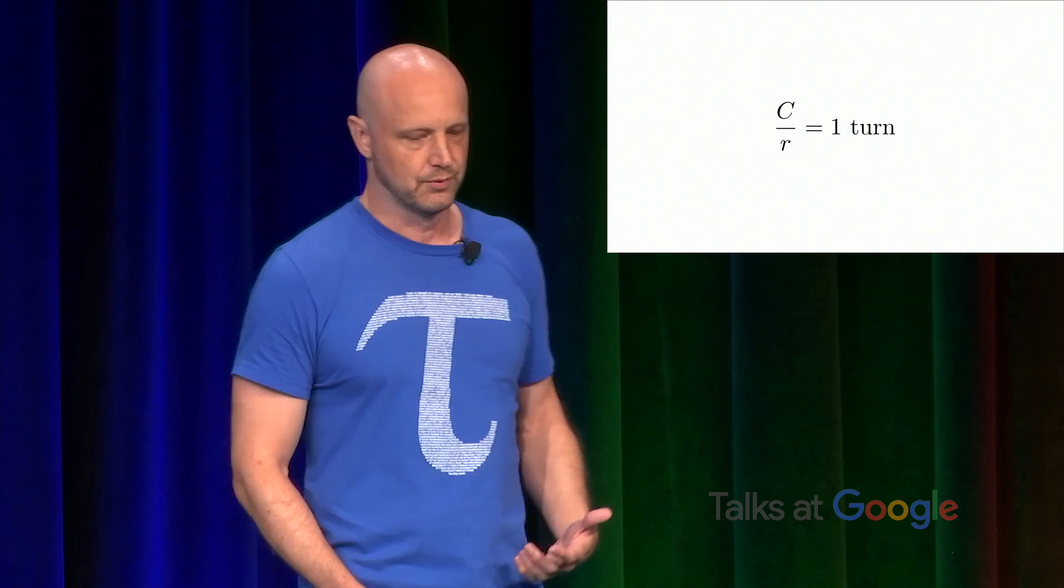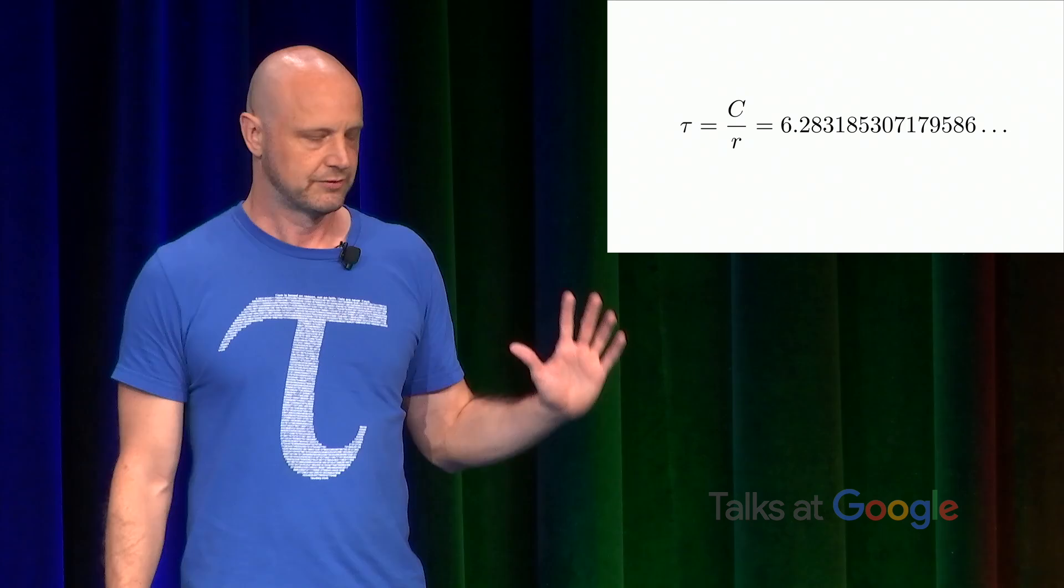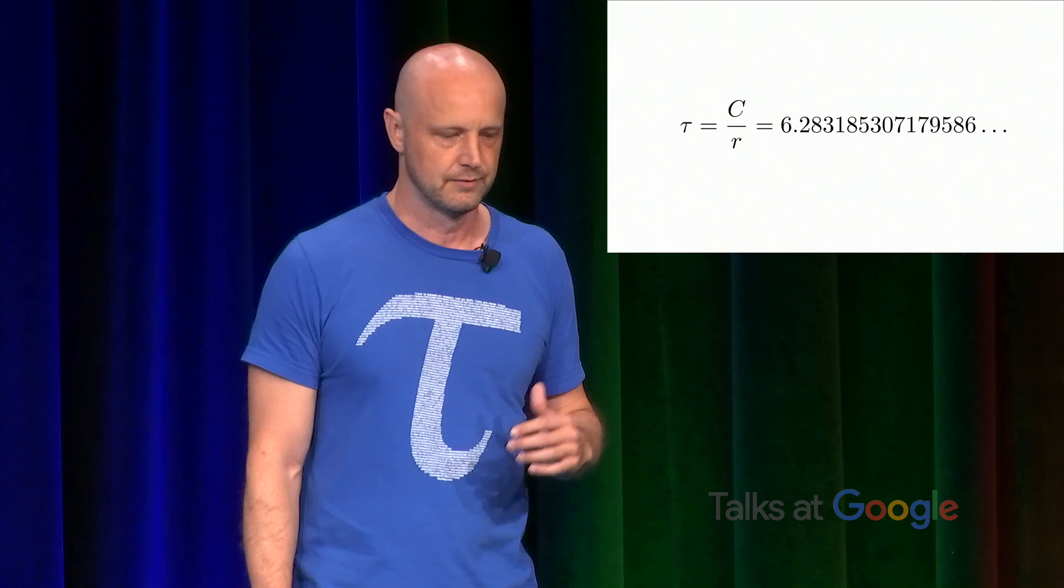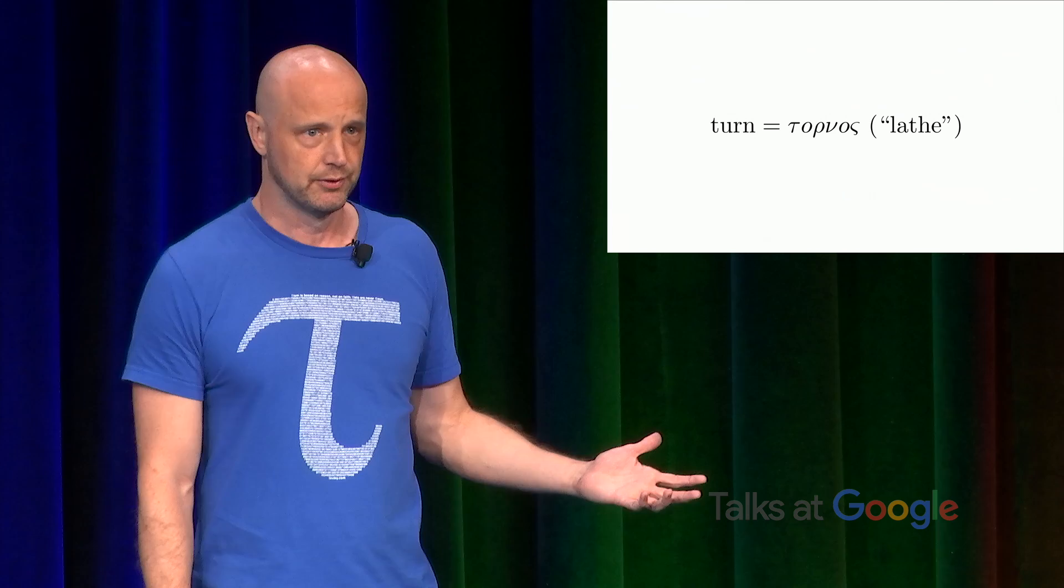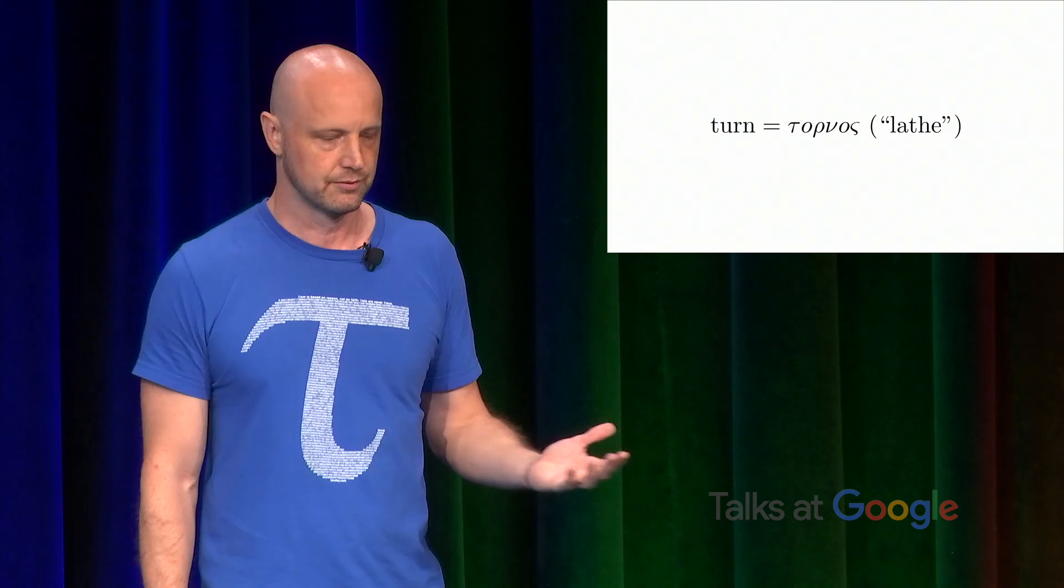I thought, all right, I'm going to introduce this notation, something that's immediately pronounceable, that's easy to typeset, and then it has kind of a visual resemblance to pi, right? It looks like pi, but missing a leg. It was also influenced by the choice of describing this as a turn. And the English word turn is based on the Greek word tornos, which means lathe. And you can see there's a tau right there at the beginning of the word.